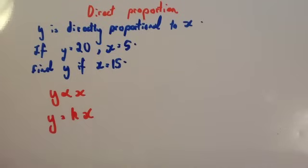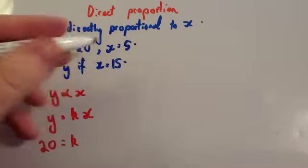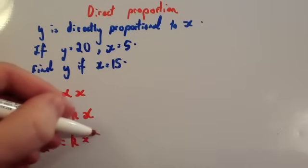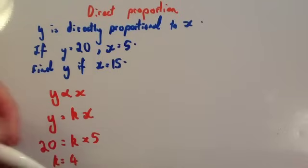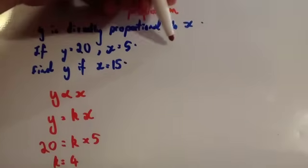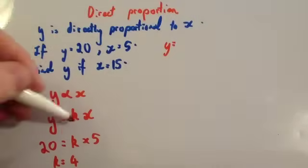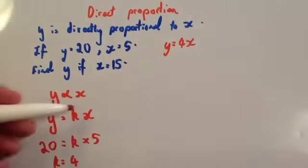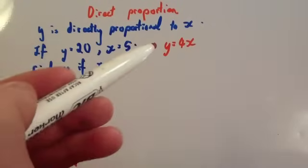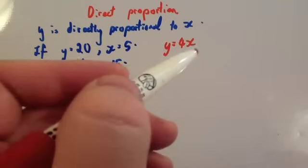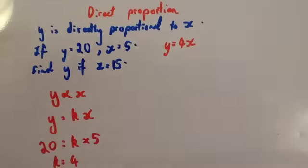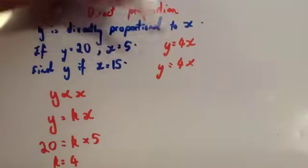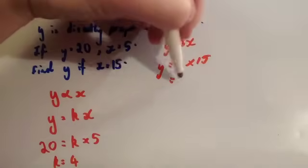Y equals K times X. We know Y equals 20, so 20 equals K times X, which is 5. So 20 equals K times 5, meaning K equals 4 — divide 20 by 5. The constant of proportionality is 4, giving us the formula Y equals 4X. To find Y when X equals 15: Y equals 4 times 15, which equals 60.